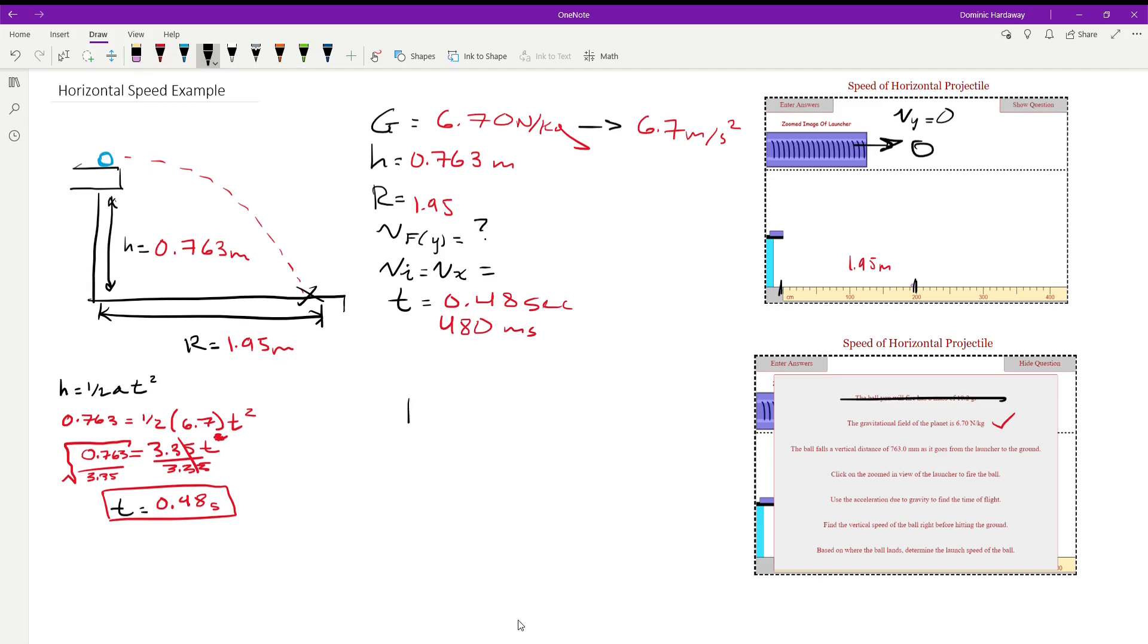So we're going to solve for that by using the r equals vx times t equation. And we're going to plug in the range and the time that we just got. And just plug and chug and divide the 0.48 from both sides. And the velocity in the x is going to be 4.06 meters per second. And there's our velocity initial.